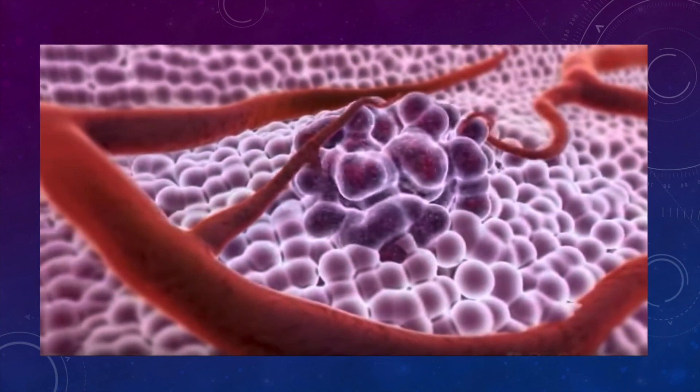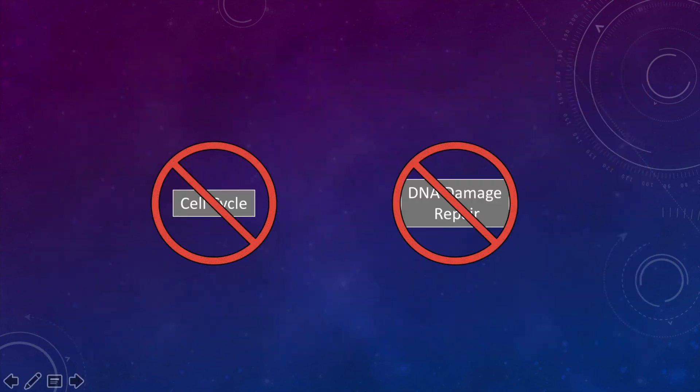PRC2 can be seen silencing processes like cell checkpoints in the cell cycle and DNA damage repair, both of which, if inhibited, highly increase the probability of cancer.